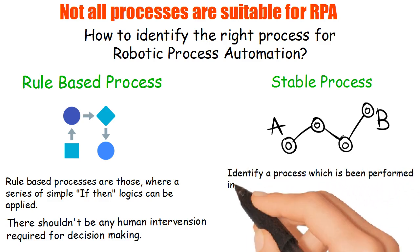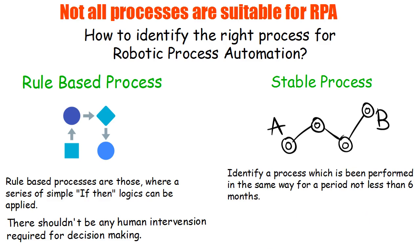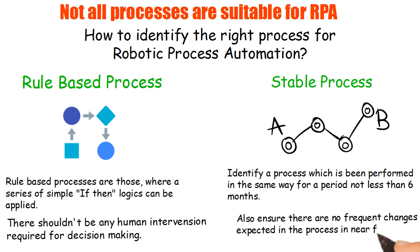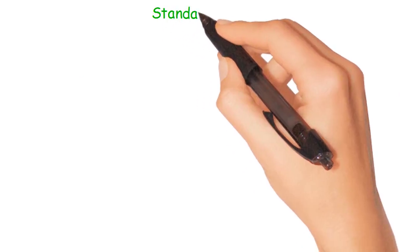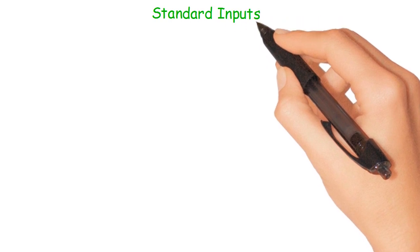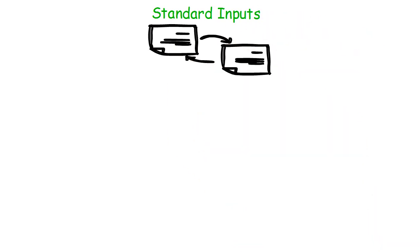Point number two: stable process. Select only the matured processes for RPA. Identify a process which has been performed in the same way for a period of not less than six months. Also ensure there are no frequent changes expected in the process in the near future.